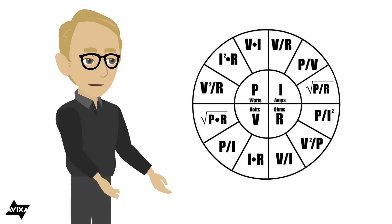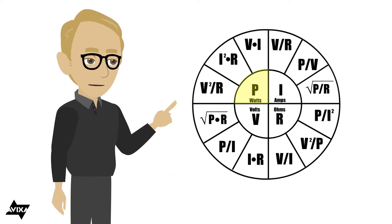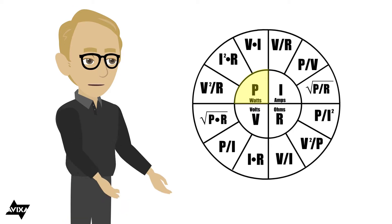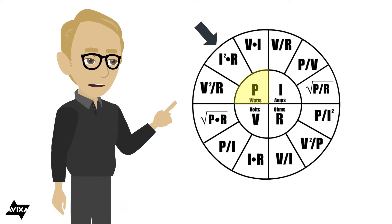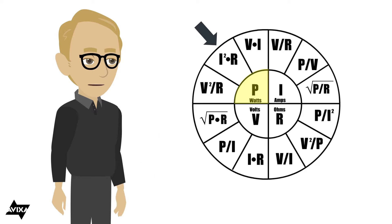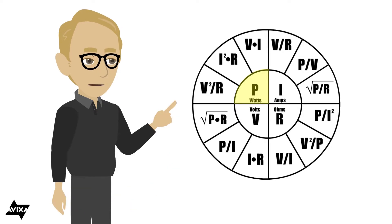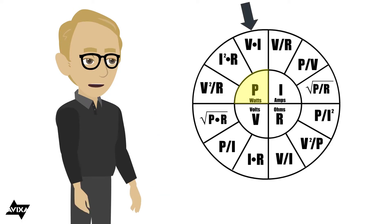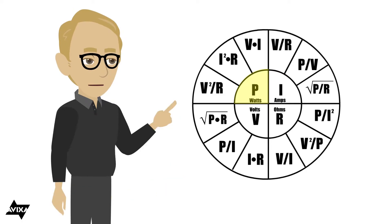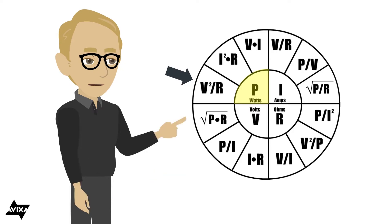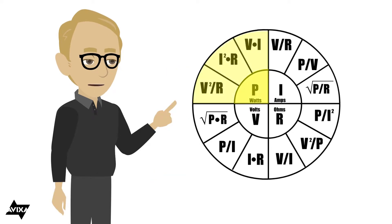For example, if I want to discover how much power is being consumed in the circuit and I know the current and the resistance, I look in the upper left quadrant and I can take current squared times the resistance of the circuit. If I know the voltage and current, I multiply voltage times current. If I know the voltage and resistance, I take voltage squared divided by the resistance. That's the upper left quadrant for power.